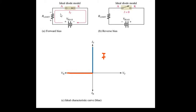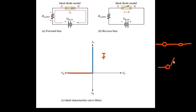We represent an ideal diode with a switch. The equivalent circuit for an ideal diode is a switch. When it is forward biased, the switch is closed, and when it is reverse biased, the switch is open. When a switch is open, it doesn't allow the flow of current in the circuit.